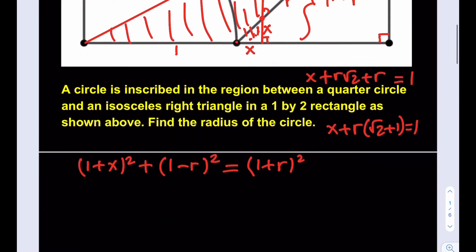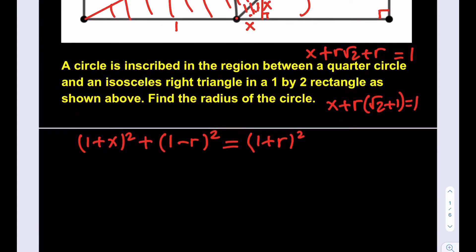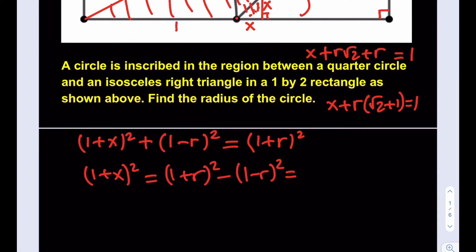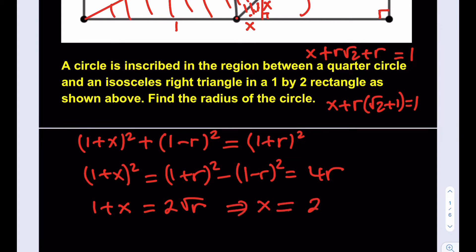We're going to use our identity here and subtract (1 minus r)² from both sides, giving us (1+x)² = (1+r)² − (1−r)² = 4r, which is a very helpful identity. Taking the square root of both sides (positive solution only), we get 1 plus x equals 2 times the square root of r. From here I can isolate x, since we're trying to solve for r, the radius of the circle.